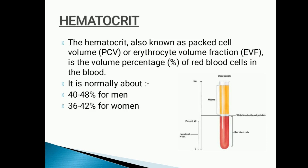Next we have hematocrit, also known as packed cell volume (PCV) or erythrocyte volume fraction. It is the volume percentage of red blood cells in the blood. 40 to 48% is normal for men, whereas for women it is nearly 36 to 42%.